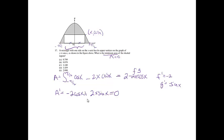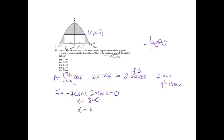If you graph that on your calculator, you should find two places. I looked at where the graph went from negative to positive because that's where a minimum would occur — going from positive to negative would be a maximum. There were two specific values: one was 0.860 and the other was 3.426.